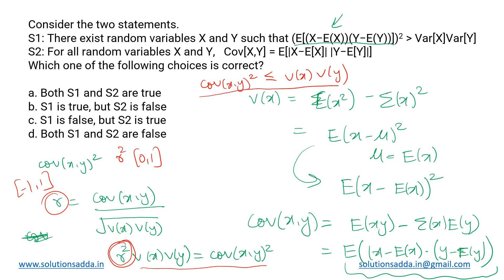Using this inequality, we now evaluate Statement 1. Its left-hand side is covariance of (X, Y) the whole square, and its right-hand side is variance of X times variance of Y, but the inequality used is 'greater than.' We just showed that it should be less than or equal to, so Statement 1 is incorrect.